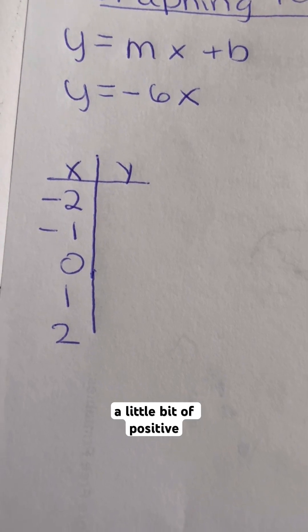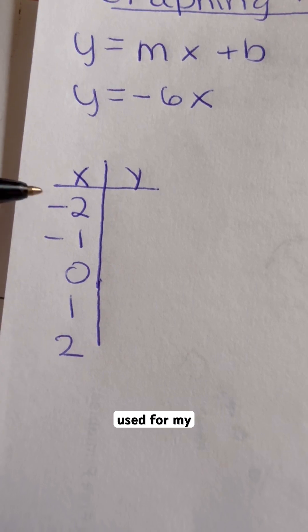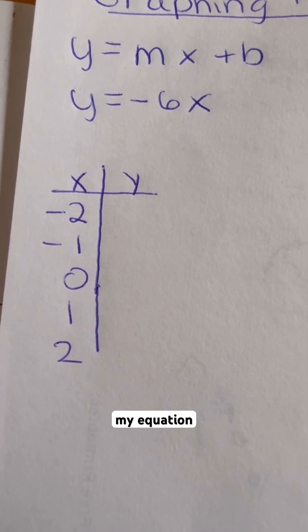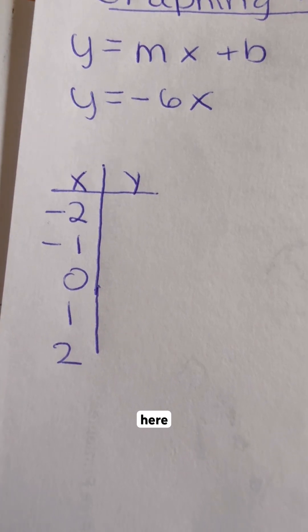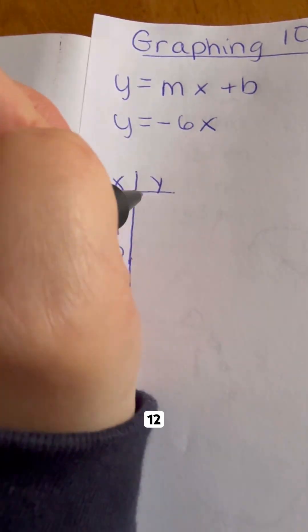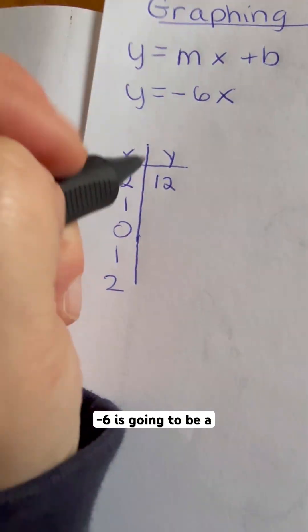I did a little bit of negative, a little bit of positive. So all I'm going to do is substitute what I've used for my x's and plug them into my equation and just solve. Negative 6 times negative 2 is going to give me positive 12. Negative 1 times negative 6 is going to be positive 6.